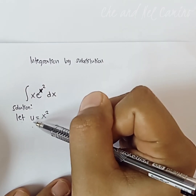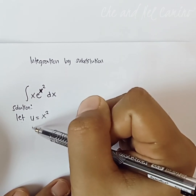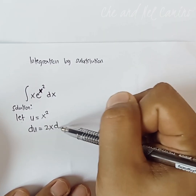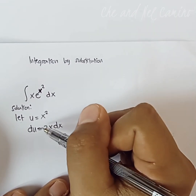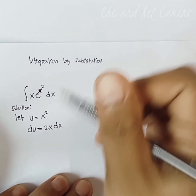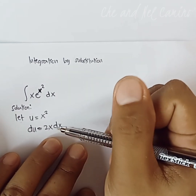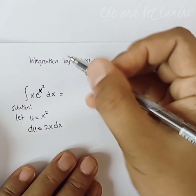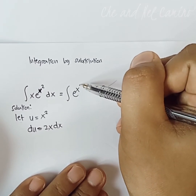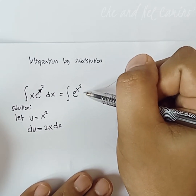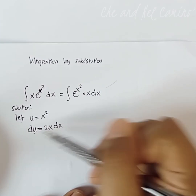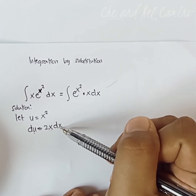The next process is to derive u. We have the derivative of u equal to 2x dx. Before we simplify, we are going to rewrite the integral: the integral of e to the power of x squared, times x dx.